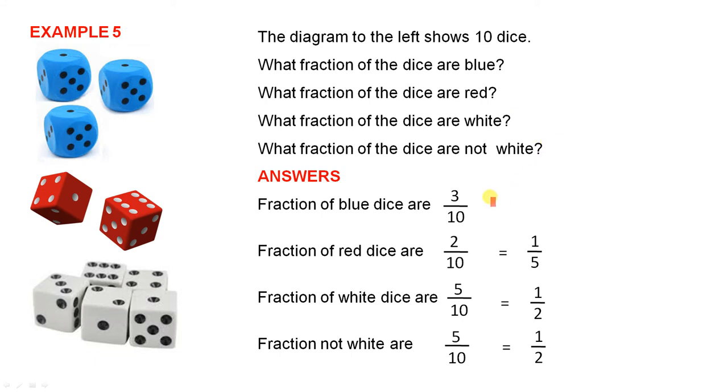The fraction of the dice that are blue is 3 over 10 because it's 1, 2, 3 out of a total of 10. Fraction of the dice that are red is 2 out of 10, because there are 2 red dice. That can be simplified to 1 over 5. Fraction of white dice is 5 over 10. 5 out of 10 represents one-half.